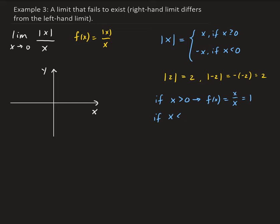If x is strictly less than 0, then the absolute value of x on top gives us negative x (since x is negative, that's a positive value), and on the bottom we have a negative value. So this gives us negative 1.